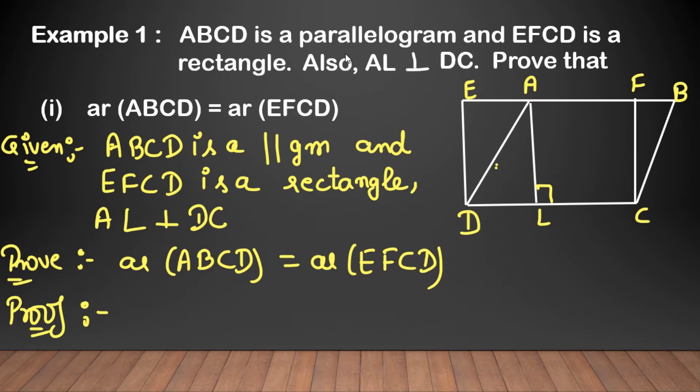Now in example 1, ABCD is a parallelogram and EFCD is a rectangle. Also AL perpendicular on DC. Prove that area of ABCD equal to area of EFCD. Sub se pahle, given likhna hai. ABCD is a parallelogram and EFCD is a rectangle and AL perpendicular on DC. Given, to prove: Area of ABCD equal to area of EFCD.